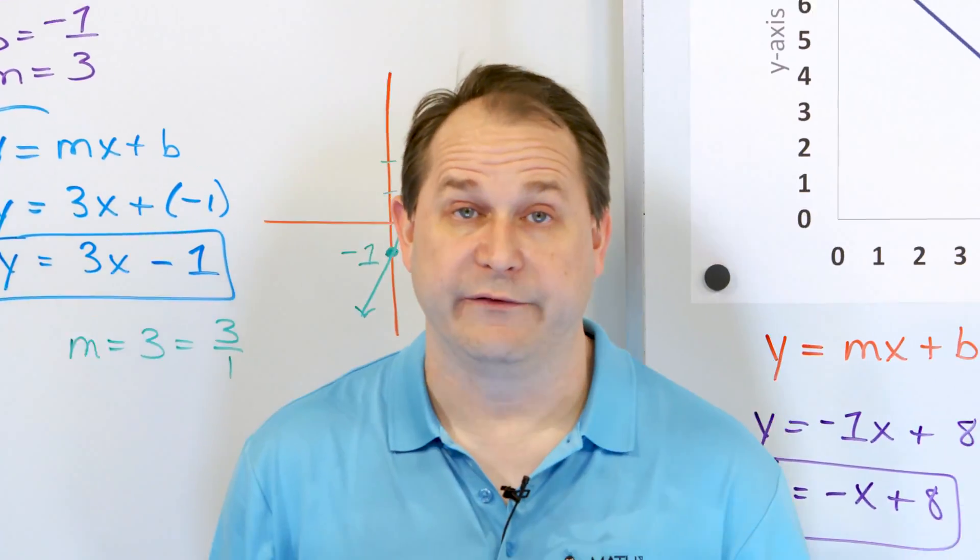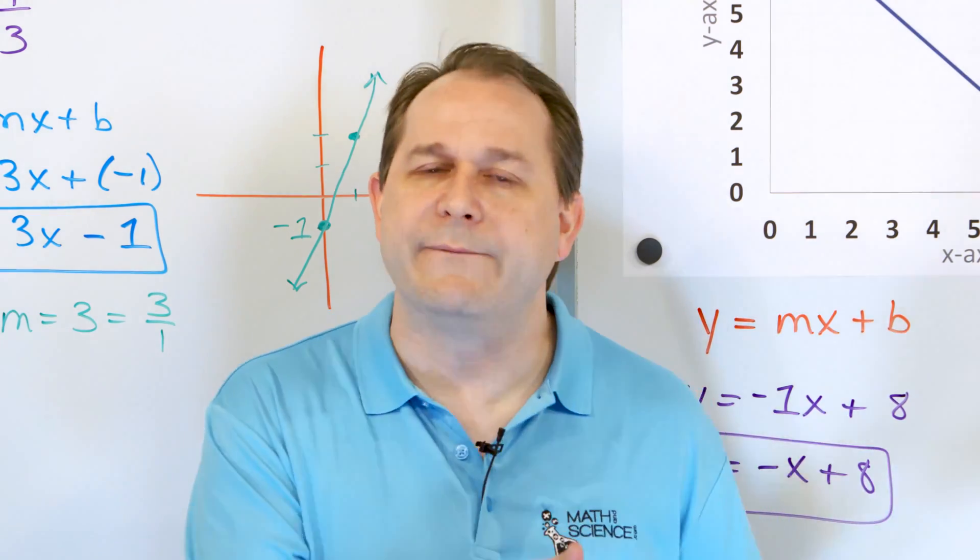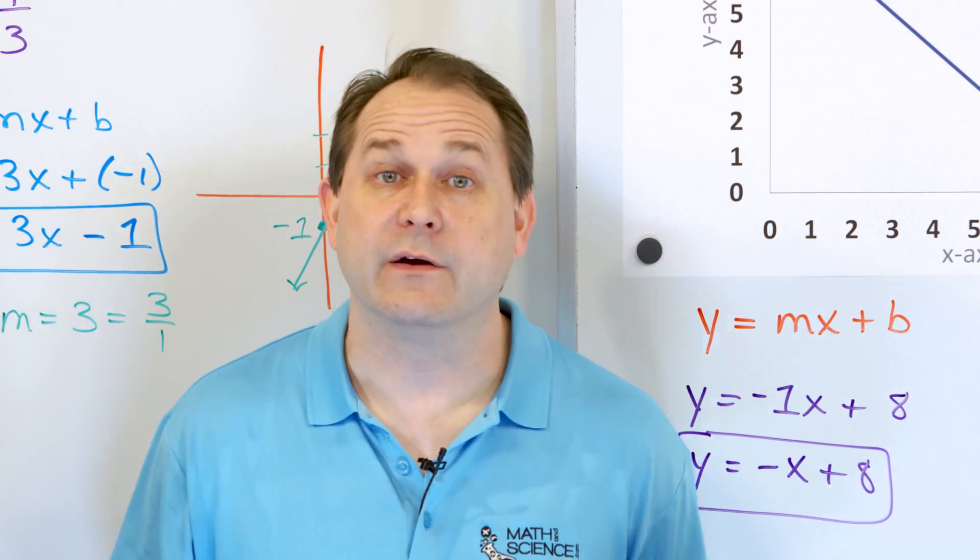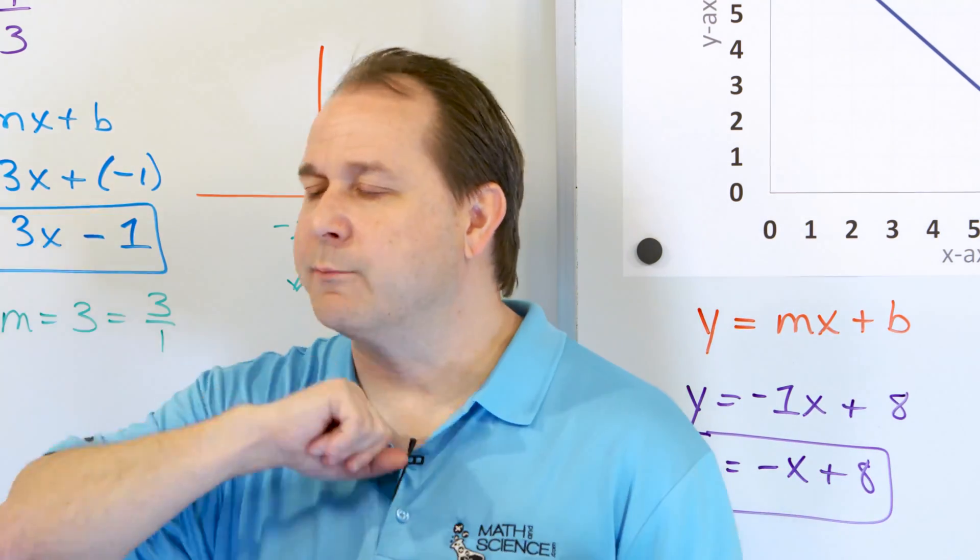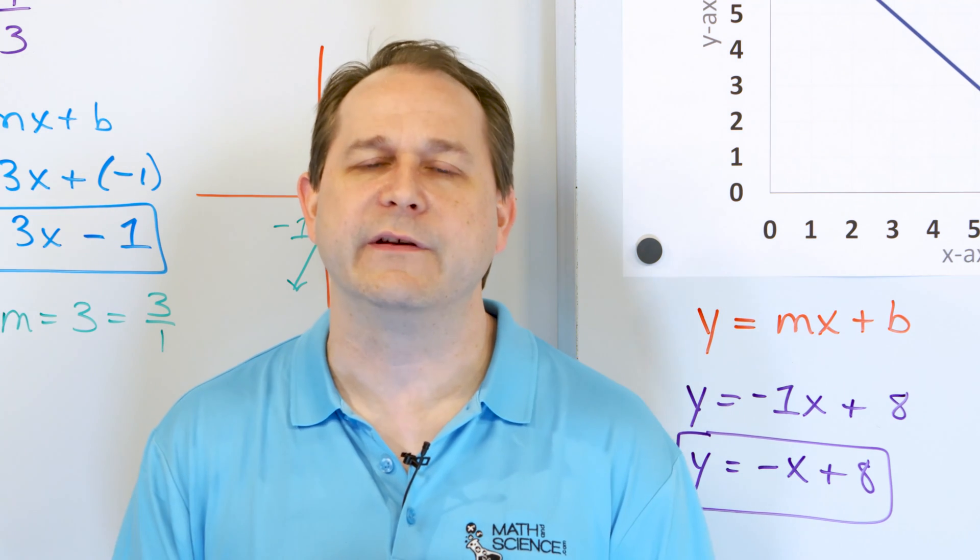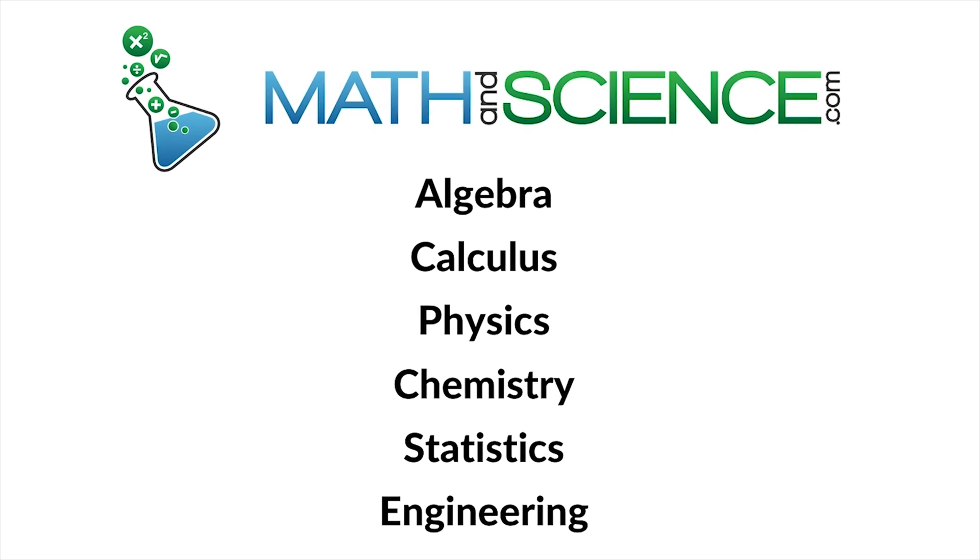So here we've gone backwards. Instead of graphing something, I am instead giving you a graph or giving you information and asking you to write down the equation of the line. It's an important skill. So solve these yourself. Follow me on part two. We'll continue working on this skill of writing equations using the slope and the y-intercept. Learn anything at mathandscience.com.